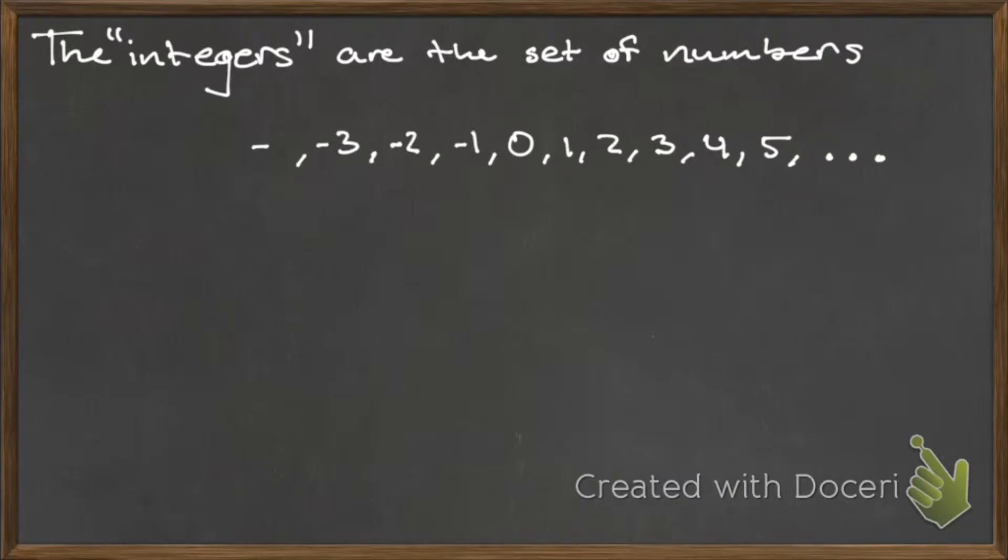The three dots at either end of this list are known as ellipses and they are a placeholder for all of the numbers that we cannot write down on this list since the integers extend in either direction forever.